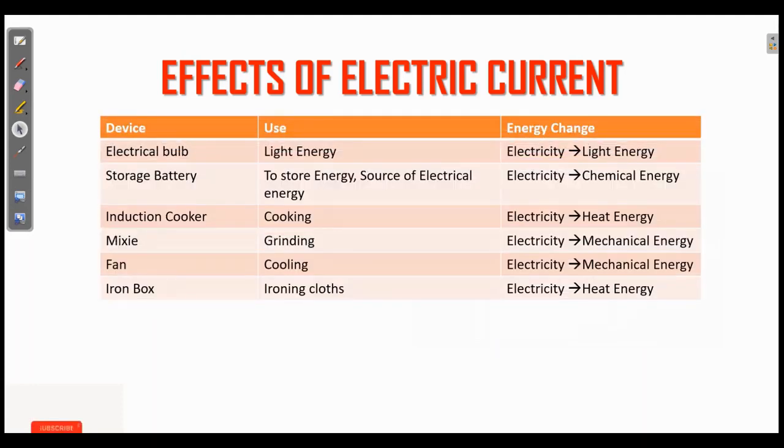Then here is the table. This is important, we have a question here. So we just conclude all the things which are explained earlier. Electrical bulb: use is light energy, energy change is electricity to light energy.